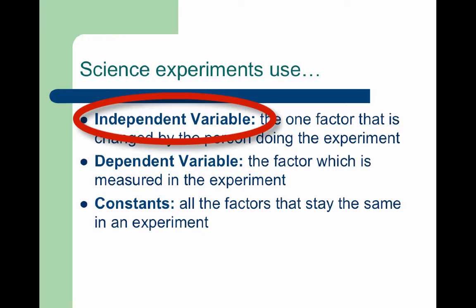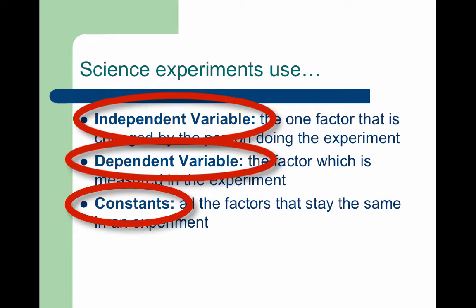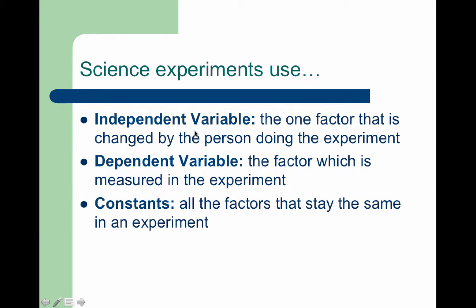Scientific experiments use three different things: independent variables, dependent variables, and constants. Our independent variable is the factor that we change — it's what we are changing to see if it has an effect on something. The dependent variable is the factor which we measure at the end of the experiment, and our constants are all the other factors that have to stay the same.